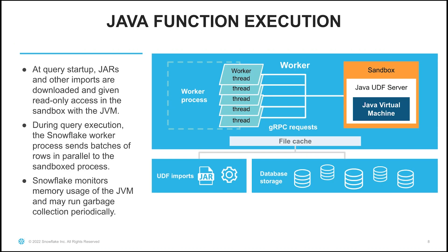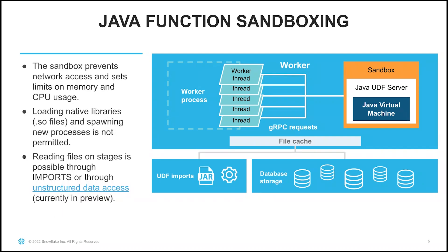At query startup, we copy jars and other imports from the stage to the warehouse nodes and give them read-only access in the sandbox to the JVM. During query execution, each Snowflake worker process sends batches of rows in parallel to the sandbox process. Snowflake monitors memory usage of the JVM and may run garbage collection periodically. The sandbox prevents network access and sets limits on memory and CPU usage so resources don't compete with the rest of query execution. It does not allow loading native libraries or spawning new processes. If you want to read files, you can use the imports clause or the unstructured data access feature, currently in preview.